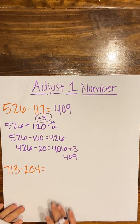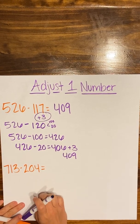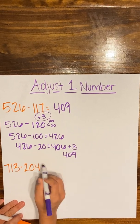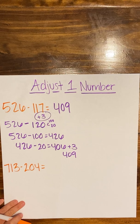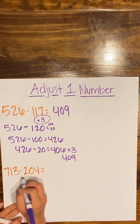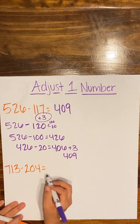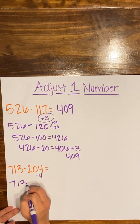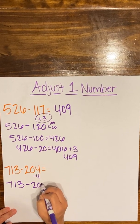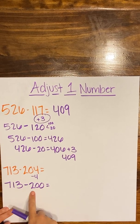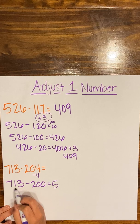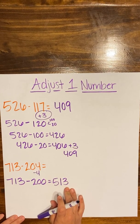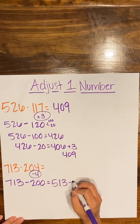With the adjust one number strategy, you can add or subtract to change one of the numbers. Here I have 713 minus 204. That four is going to cause regrouping in the ones place. In this case, I think it's easiest to make 204 into 200 by subtracting four. So I'm not changing my 713. 204 minus 4 gives me 200. Now, 700s minus 200s leaves 500s, and my 13 stays the same because I'm not taking away any tens or ones, giving me 513.